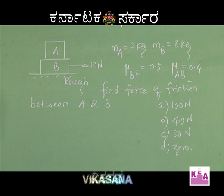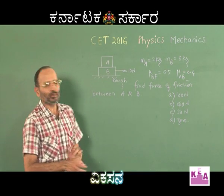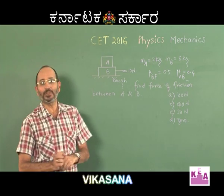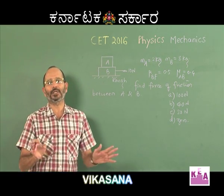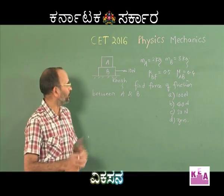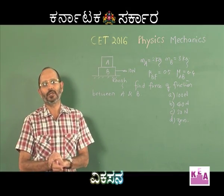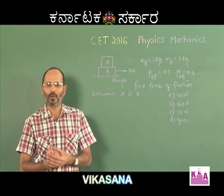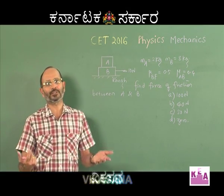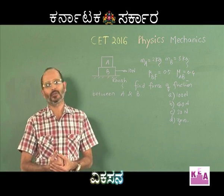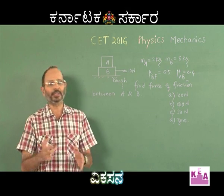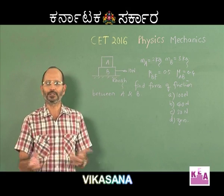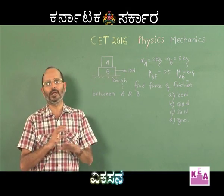Just look at the beauty of this problem. You have applied a force of only 10 newtons on B. Unless B moves, you cannot expect A to move from its place. When B moves, there are two possibilities: A can either move along with B with the same acceleration, or it can move on B with a different acceleration relative to B. But unless B moves, A cannot move from its place.